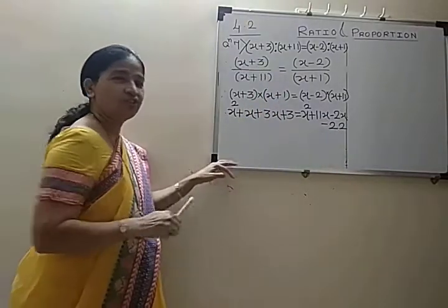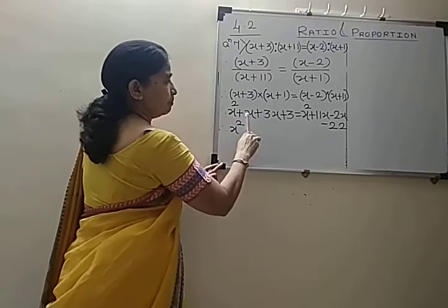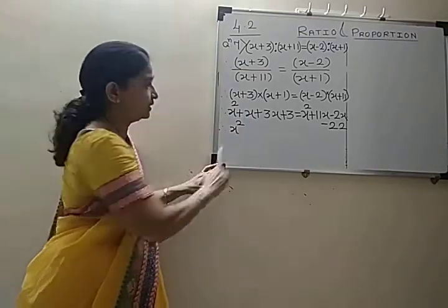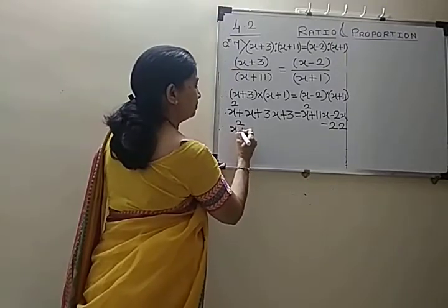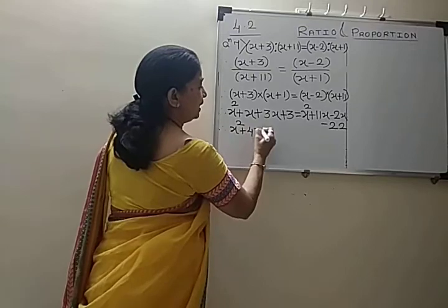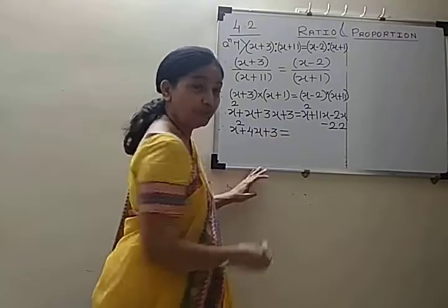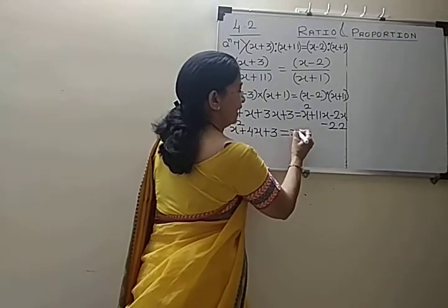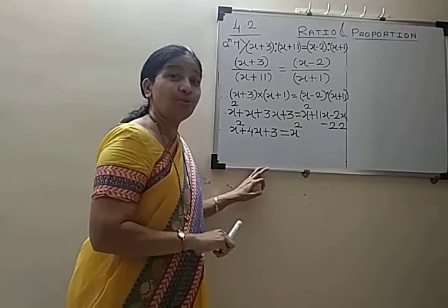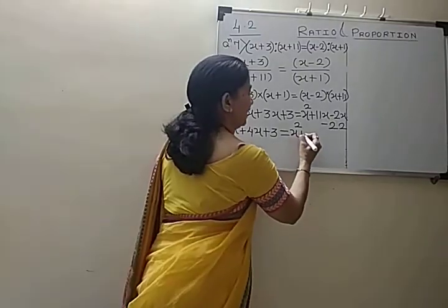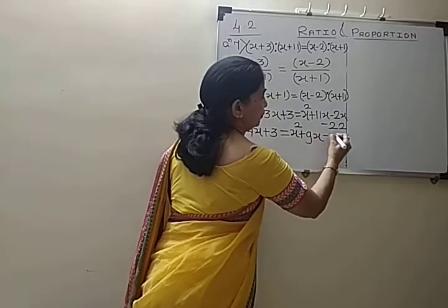Now see what the situation is. We have x squared, then 1x plus 3x gives 4x, plus 3. Is equal to x squared, plus 11x minus 2x gives plus 9x.